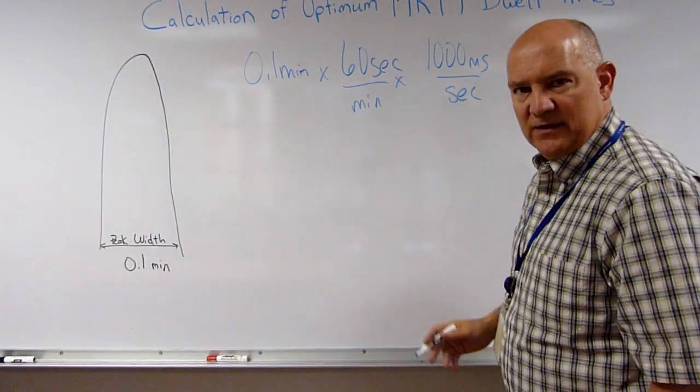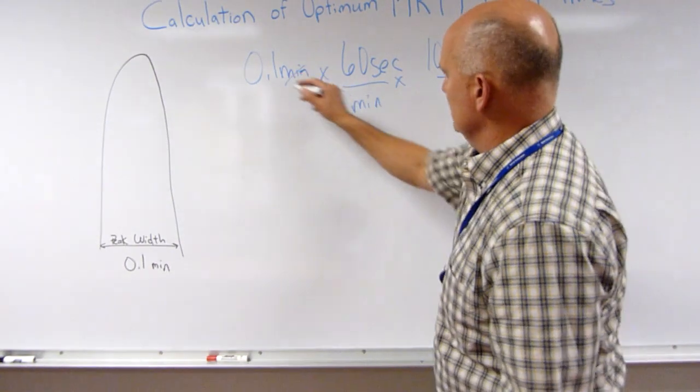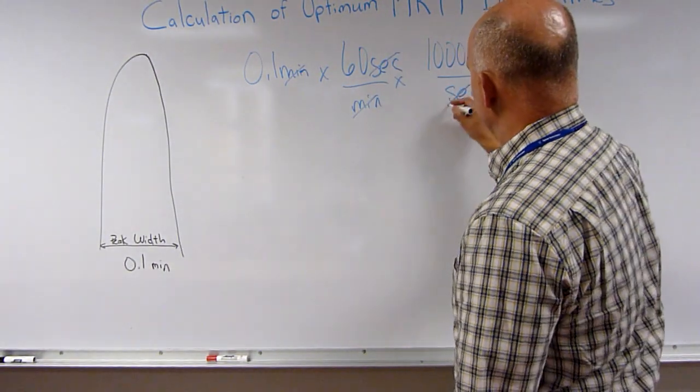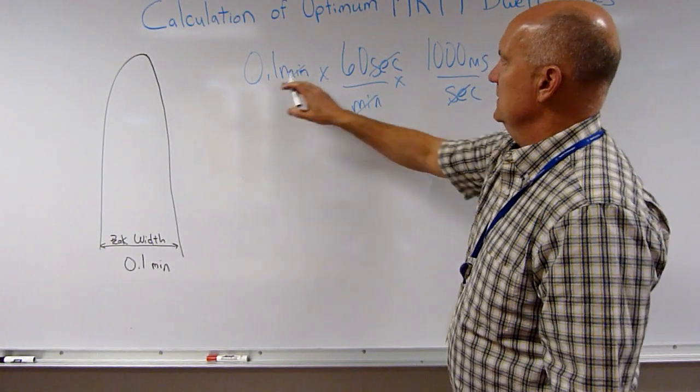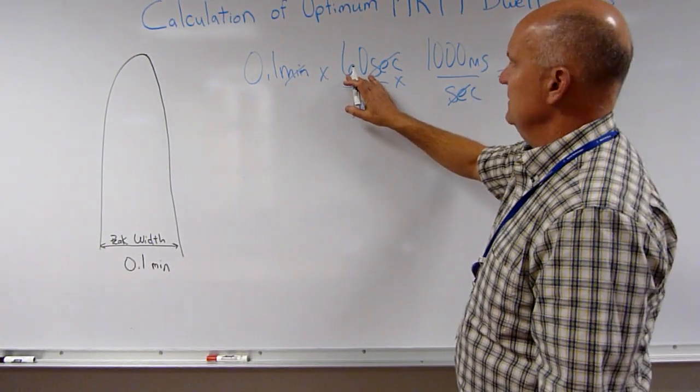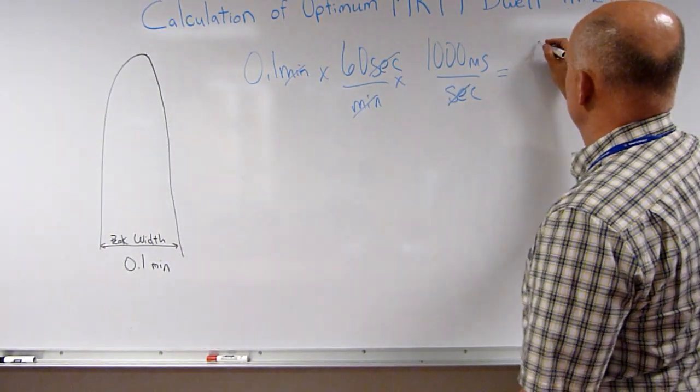And if I cancel units like I learned in freshman chemistry—minutes, minutes, seconds, seconds—I find out I'm left with milliseconds. 0.1 times 60 is 6, 6 times 1000 is 6000 milliseconds.